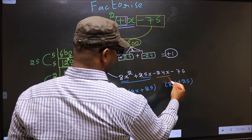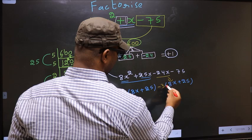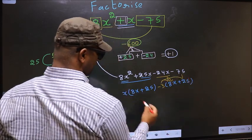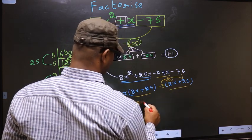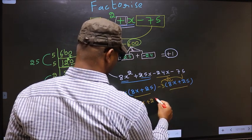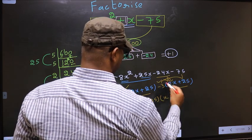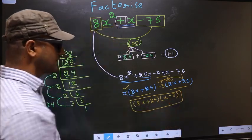Now from this 8x has gone inside, so outside you get minus 3. Even if you multiply and check till you get the same thing. Now you take out 8x plus 25 common. So here you have x and here minus 3. This is our answer.